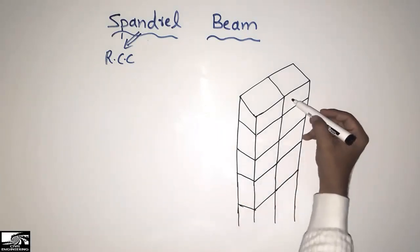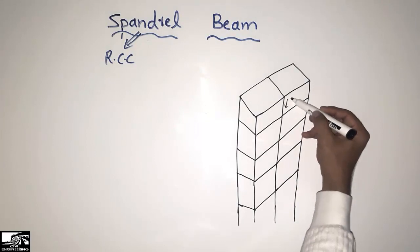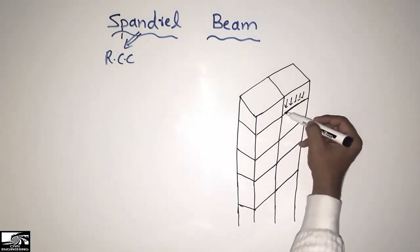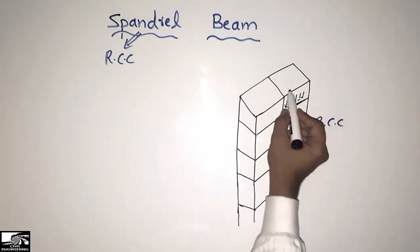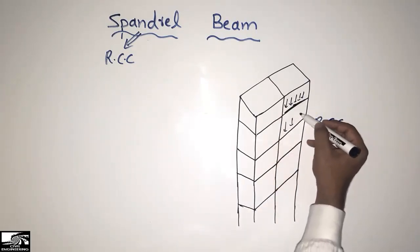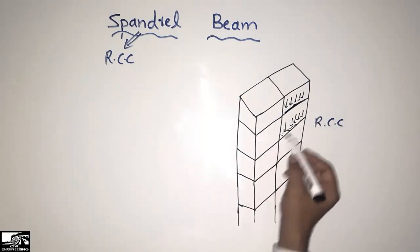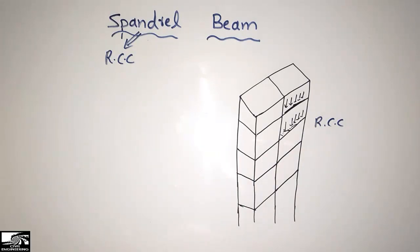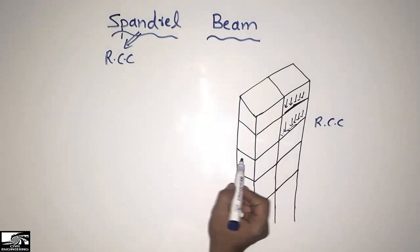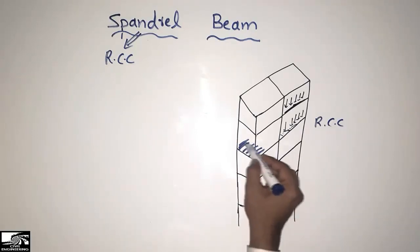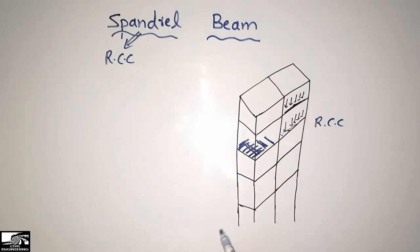Now, in this multi-story building, when the load is on the building — for example, the wall load is coming on this portion of the slab — similarly the wall load of this wall is coming on this slab. What happens is that the slab cannot take much of the wall load, so we need to increase the stiffness of the slab portion. These are the slabs inside the building.